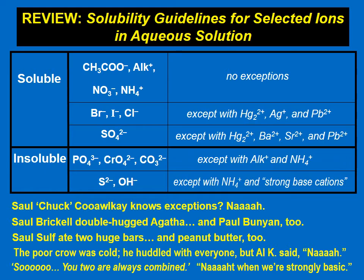Here is a chart that has guidelines for the solubility of selected ions in aqueous solution. You can see in the chart that there are three rows that relate to soluble ions and their exceptions, and two rows that relate to typically insoluble ions with those exceptions. For this reason, I came up with five mnemonics that will help us use these guidelines.